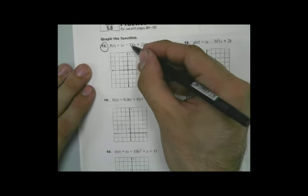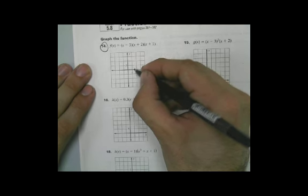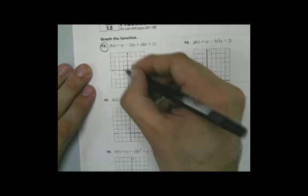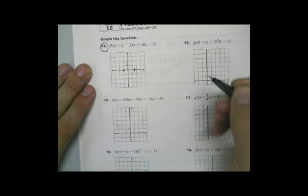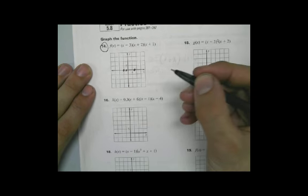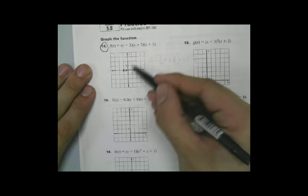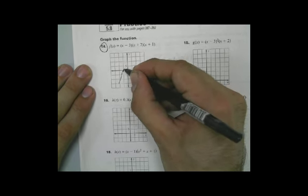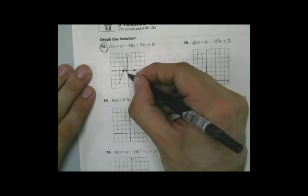Next one, I'm going to do real quick. I'm going to graph this function. Let's say we have negative 3. That's what we know it's going to pass at 3. We know it's going to pass at negative 2 and negative 1. And also, I know that the end behavior is going to be going in this direction. So I'm going to come up, come back down, come back up.